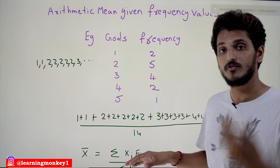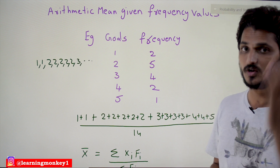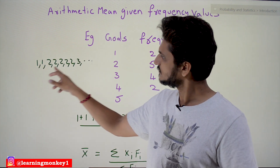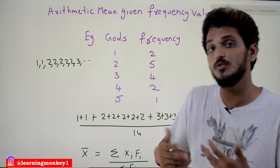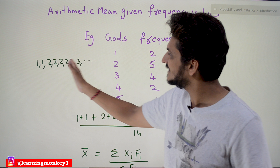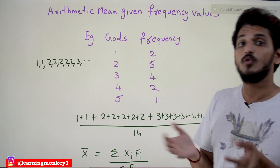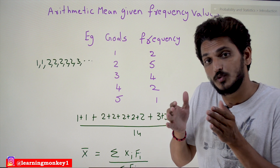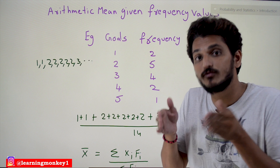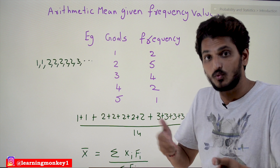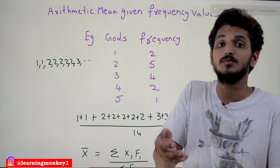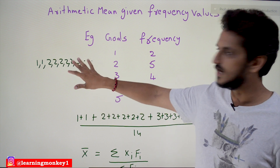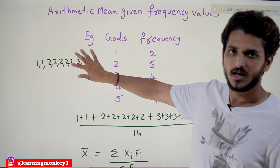If the data were not in frequency form, it would look like: 1, 1 (two players scored one goal), 2, 2, 2, 2, 2 (five players scored two goals), and so on. To find the central tendency — the average number of goals most players are scoring — that is the measure of central tendency we need to identify.